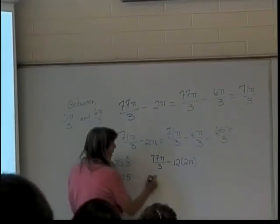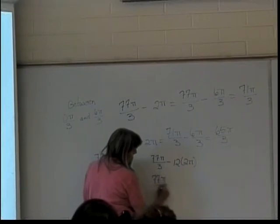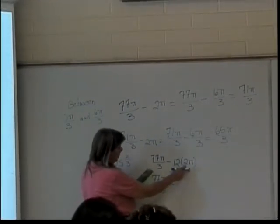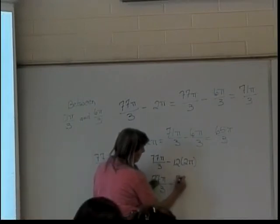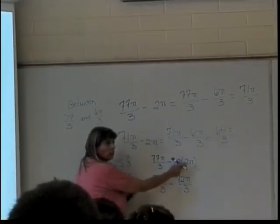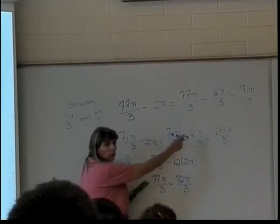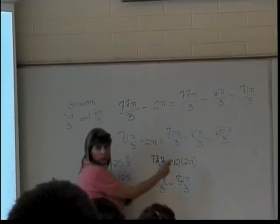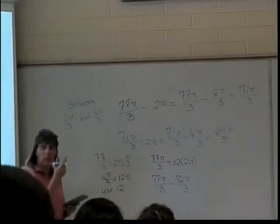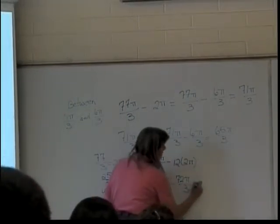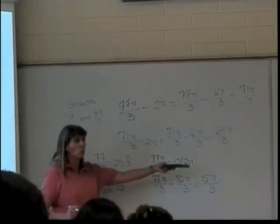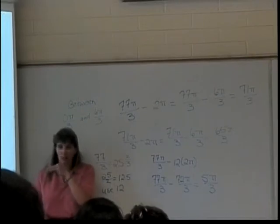So I have 77π over 3. I'm going to change this so it's over 3. It's going to be 72π over 3. The way I did that is I multiplied my 12 times my 2, and then I multiplied the numerator and denominator by 3 over 3. So that would be 12 times 2 is 24, times the 3 got me to 72. This leaves me with 5π over 3, because I subtracted off 12 full times around the circle.